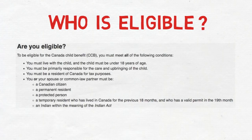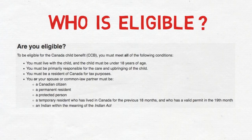To be eligible for the CCB, you must meet all of the following conditions: you must live with a child who is under 18 years of age, you must be primarily responsible for the care and upbringing of the child, and you must be a resident of Canada for tax purposes — simply doing a soft landing is not enough. You or your spouse or common-law partner must be a Canadian citizen, permanent resident, protected person, or a temporary resident who has lived in Canada for the previous 18 months and holds a valid permit for the 19th month.